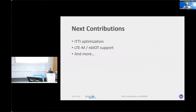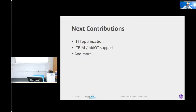Moving forward, we are planning to optimize the code with some ITTI optimization, and we are planning to add LTE-M or NB-IoT support to the existing code as well. To summarize OAI's contribution to the MAGMA project: in the first quarter of 2020 we finished the S6A abstraction, followed by the S11 abstraction in the second quarter. The release 15 edition was done in the final quarter of 2020, and in February we have finished the NSA validation. Moving forward, we are planning to add NB-IoT support.